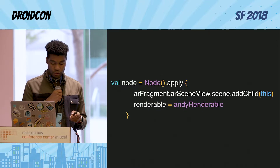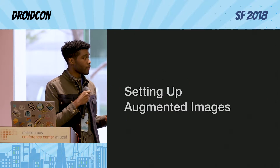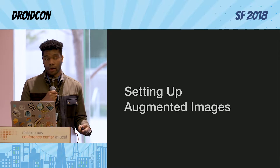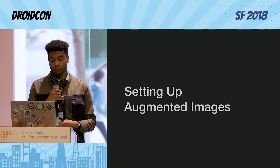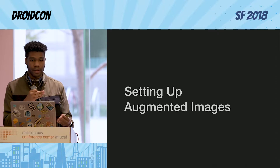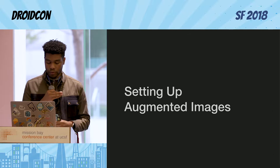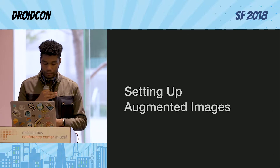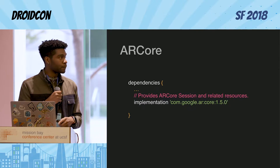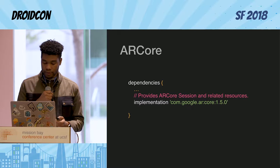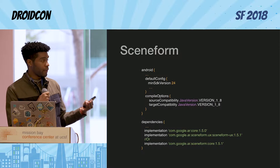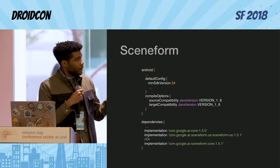Let's dive into setting up augmented images. There are going to be three dependencies that we're going to want to use: the first being ARCore, then Sceneform because it's native, and lastly the plugin as an asset viewer you'll more than likely want to use if you're doing any type of heavy AR work. Including this into Gradle is pretty simple. We're all familiar with including a dependency inside of Gradle.